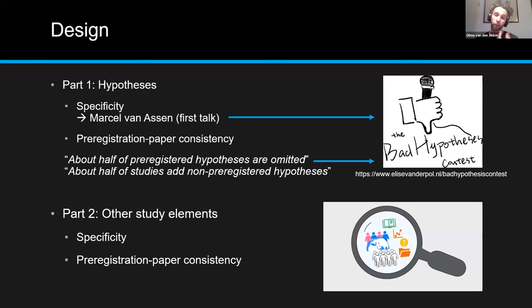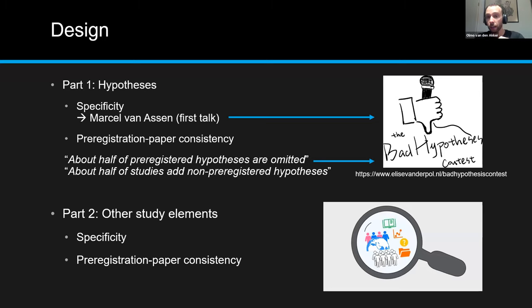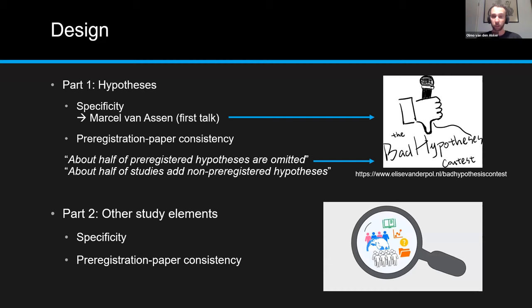In part two, we looked at other study elements beyond hypotheses — variables, statistical model, how statistical assumptions are handled, outliers, and so on. Again we looked at specificity or producibility and pre-registration–paper consistency. We categorized elements as essential or non-essential. Essential elements are directly related to the empirical cycle: variables, data collection procedure, statistical model, and inference criteria.